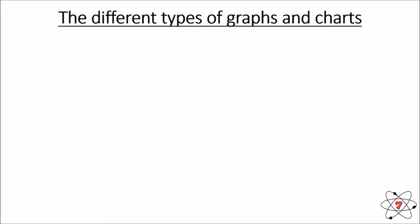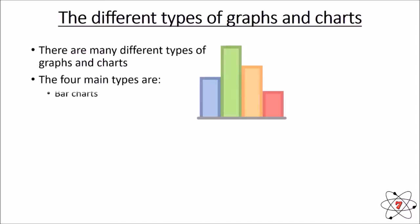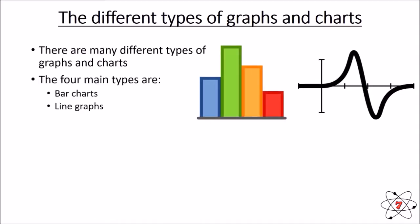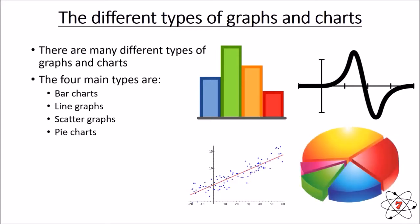Now, there are different types of graphs, and each one needs to be used in a slightly different way. So the four main types are bar charts, line graphs, scatter graphs, and pie charts. Line graphs and scatter graphs are pretty similar, but bar charts and pie charts are not. So each set of graphs should be used to represent different types of data.